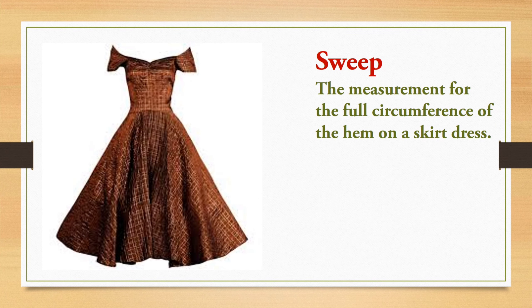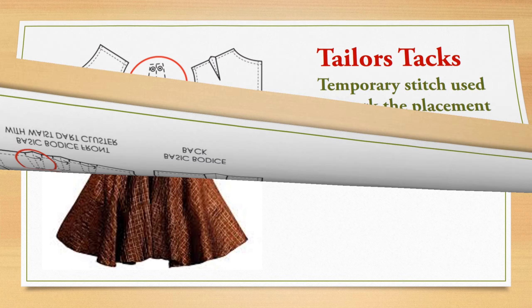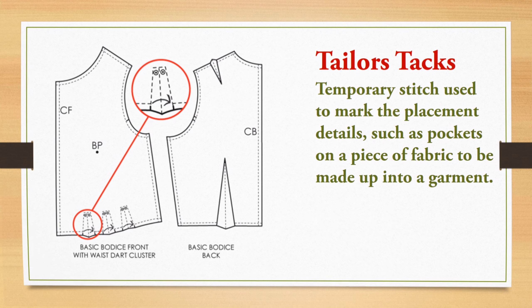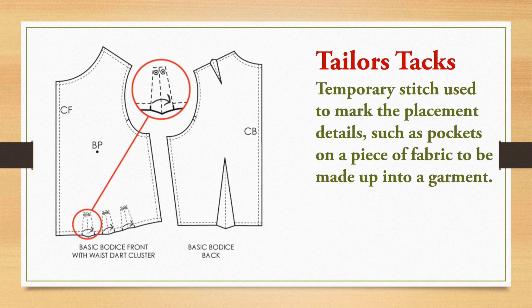Next term is sweep. Sweep is the term we use for the hemline measurement of a circular, half-circular, or semicircular garment, like skirts or dress forms. This measurement is called sweep.